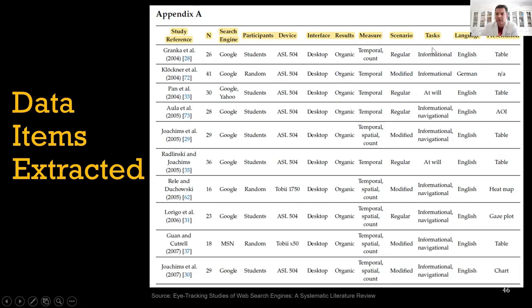What tasks were the students given, which language was used, how was the information presented. These all attributes or data items are related to this particular paper which is on web search engines or search engines. These are specific to them. In your case, you will have something different here.